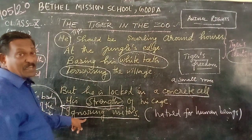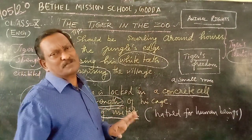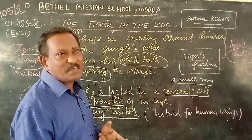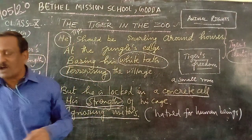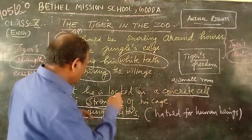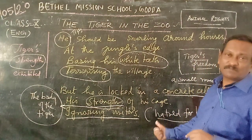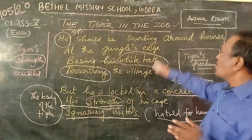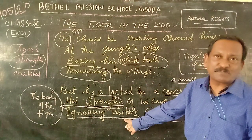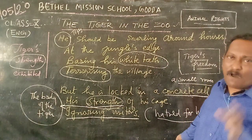And ignoring visitors — this is a very important line. Who are the visitors? The visitors are the people, the spectators who come to watch the tiger. But the tiger does not look at them, does not smile at them, does not even growl at them. Instead, he just moves away — he is passive, he does not react, he does not respond to the people who come to see him. This shows that the tiger has developed a hatred for human beings. That hatred is because of the selfishness of mankind. Man has become selfish, and because of his selfishness, a tiger suffers. The tiger hates human beings for their selfishness, their greed.